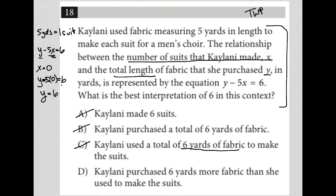Choice D. Kehlani purchased 6 yards more fabric than she used to make the suits. Now, that makes sense, right? Because that's saying that this 6 yards of fabric is not tied to the number of suits that she makes. Which is why, even if she made no suits at all, she still had this 6 yards of fabric. So, she bought 6 yards of fabric just to make sure she had an extra 6 yards around, probably.